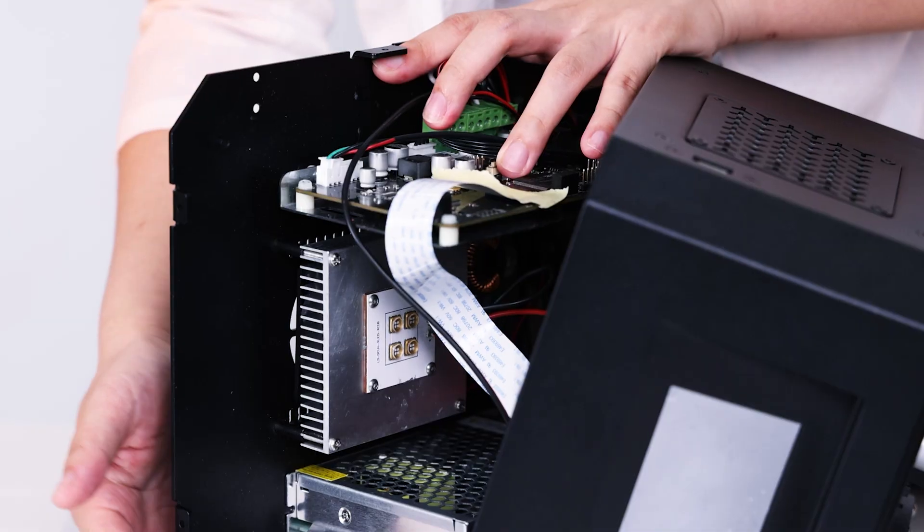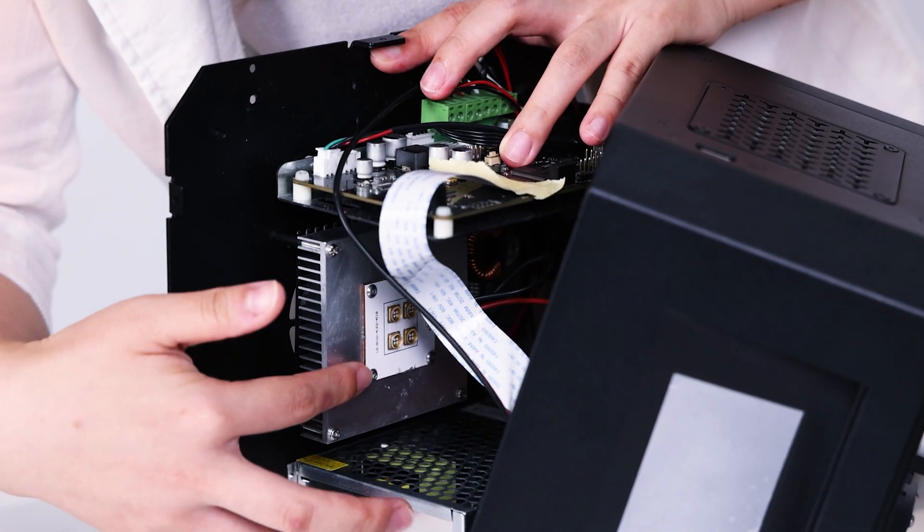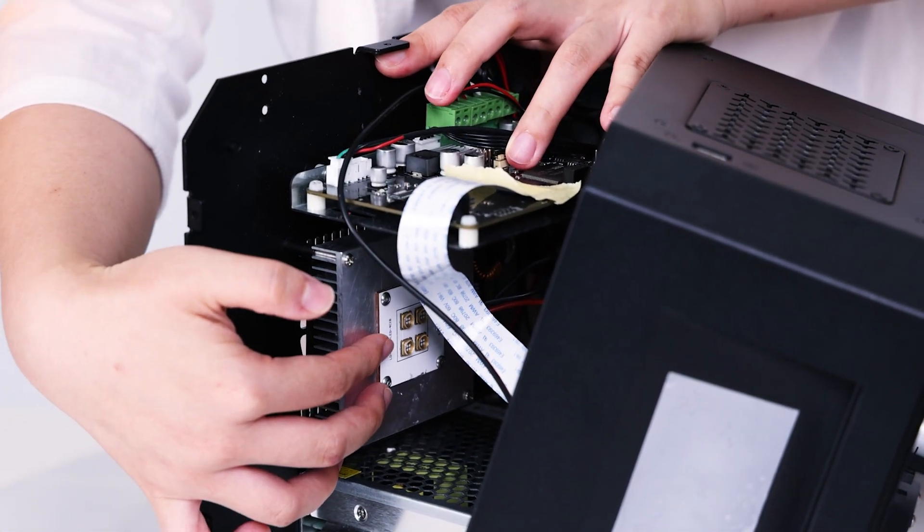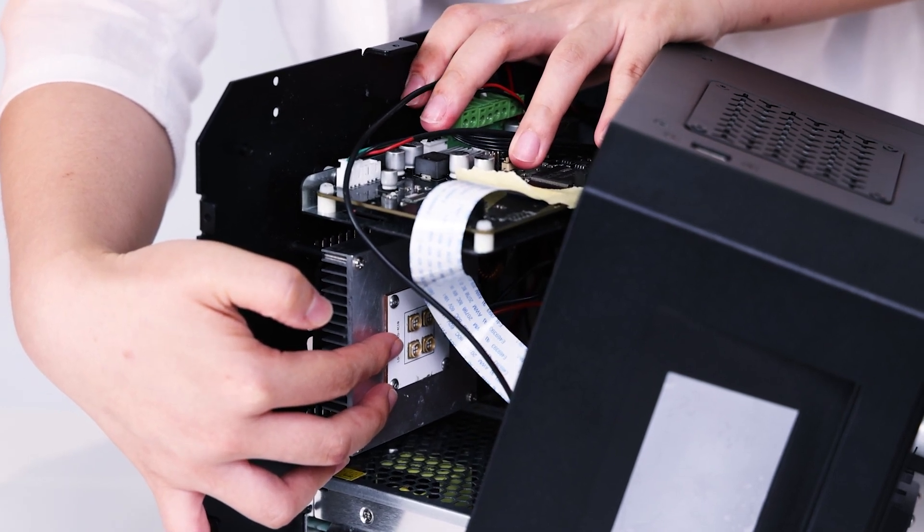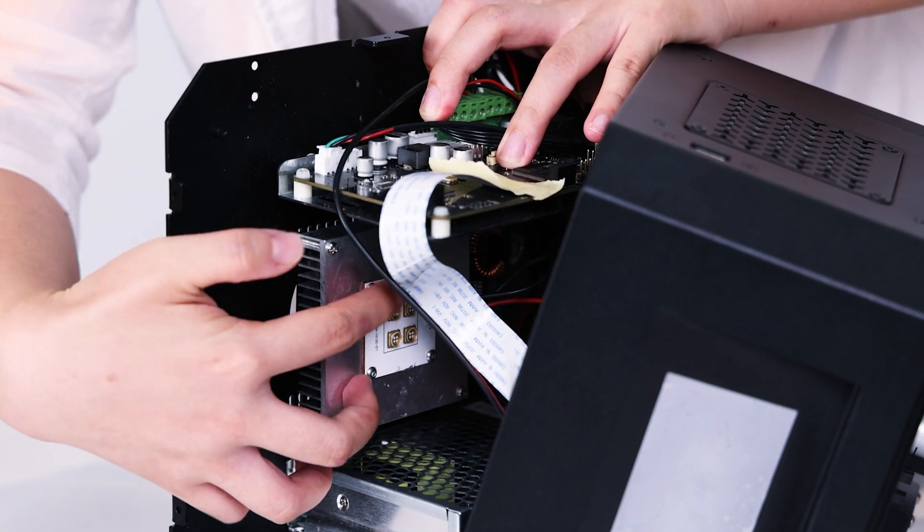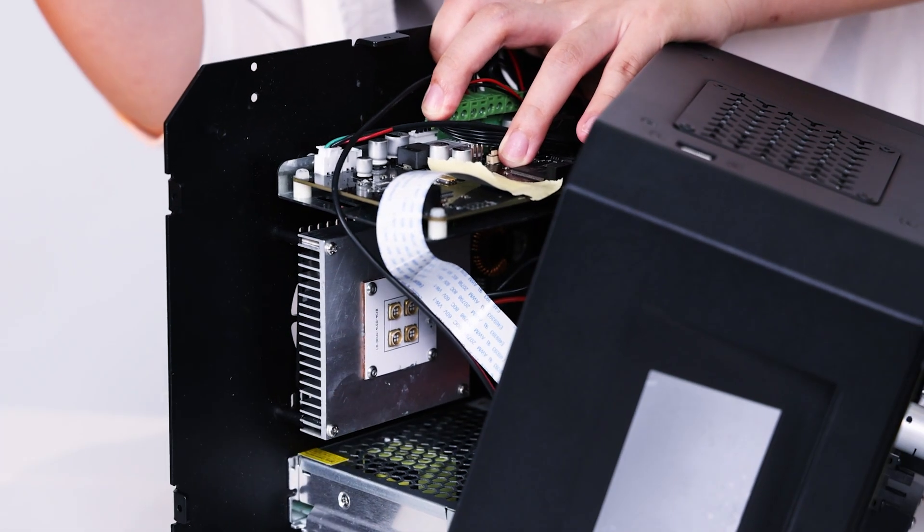Wow. You see, this is the core component, the light source. The traditional matrix light source was made up of four small lamps. Just these four, you see. But that one is different.